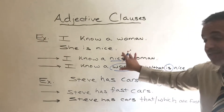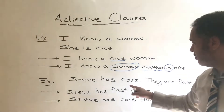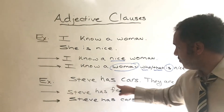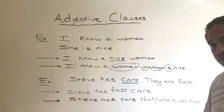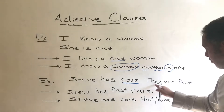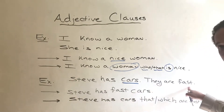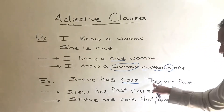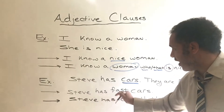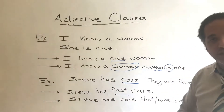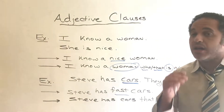Now that's for people — let's talk about objects. 'Steve has cars. They are fast.' So I can say 'Steve has fast cars.' That's one way I can say or write it.